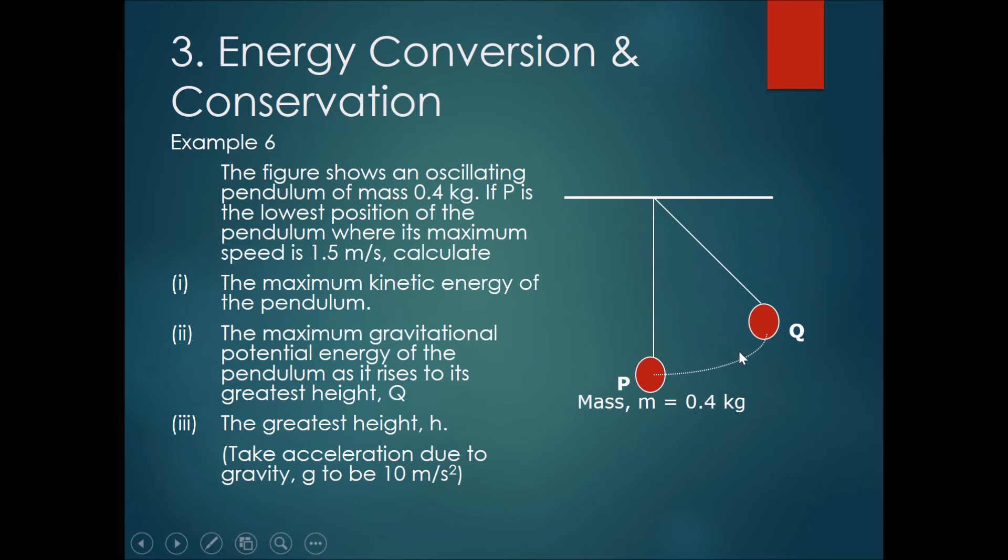Now let's try this example based on the pendulum ball and calculations. The figure shows an oscillating pendulum of mass 0.4 kg. P is the lowest point of its pendulum, where its maximum speed is 1.5 meters per second, and Q is the highest point of the pendulum. You want to calculate the maximum KE of the pendulum, the maximum GPE of the pendulum, which will obviously be at Q, and the greatest height that the pendulum reaches, obviously at Q. Please pause your video here and solve the question.